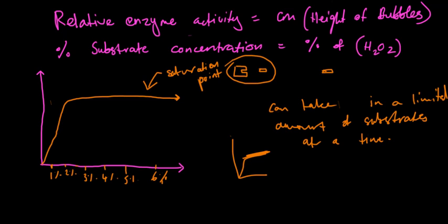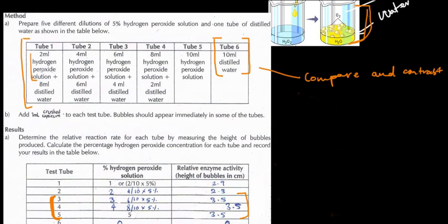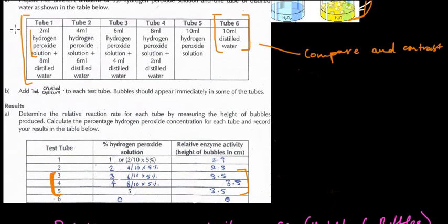So, can you tell me what we kept the same in the entire experiment? Let's go back here and have a look. We did not keep hydrogen peroxide the same. The only thing we actually kept the same was the amount of drops that we actually added to the solution. So, we added only 1 ml of crushed capsicum, which contains catalase, to every single solution.